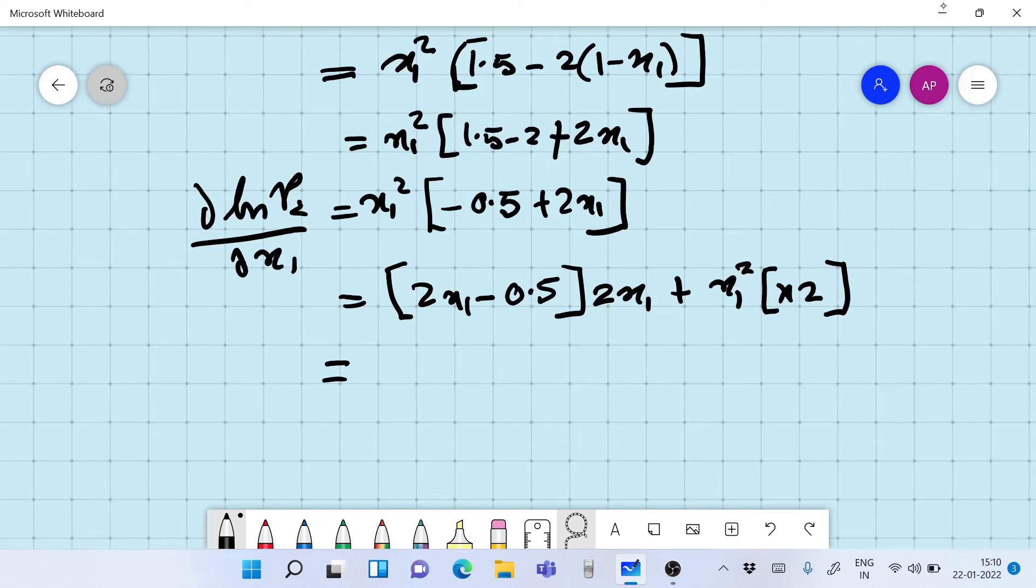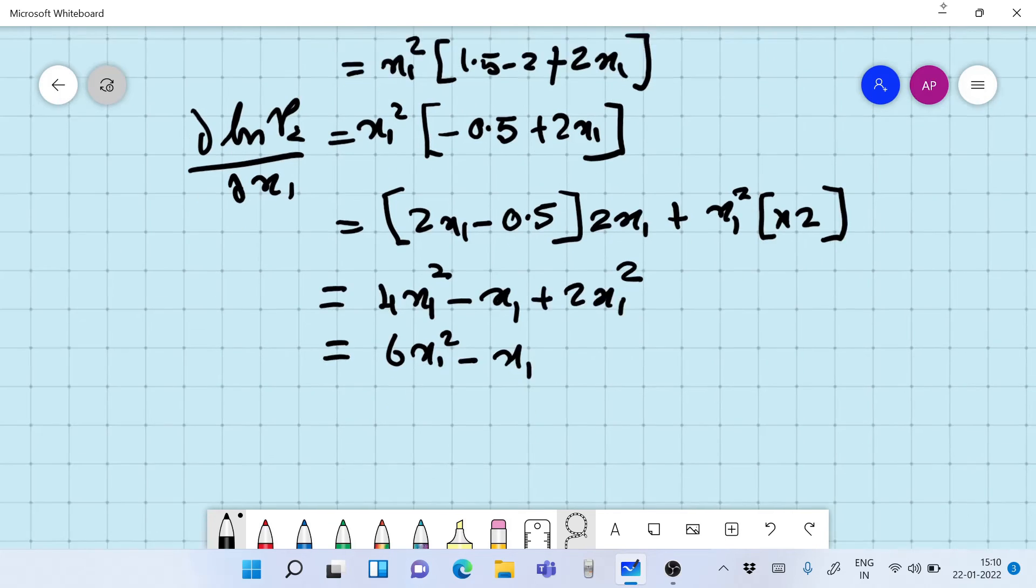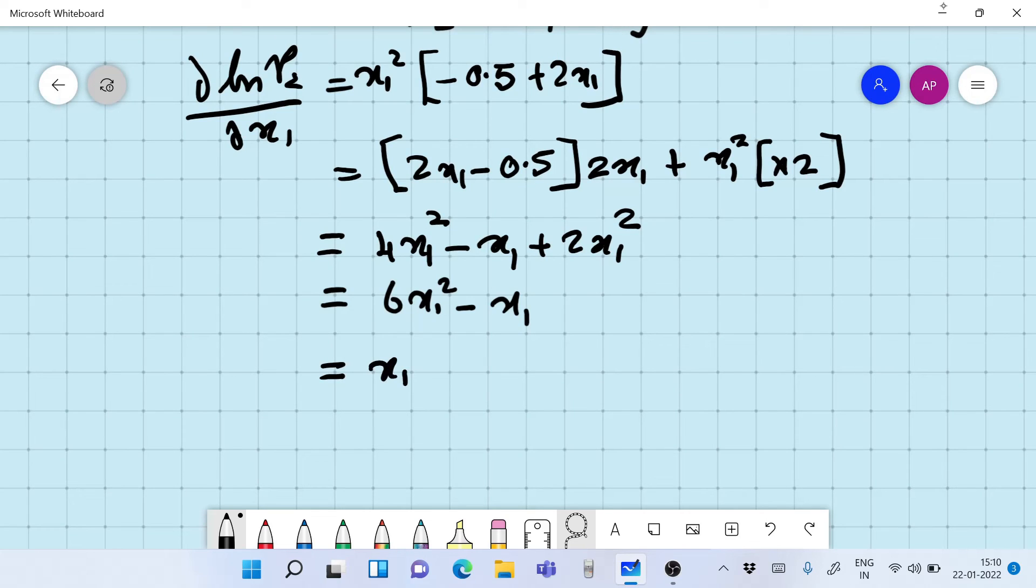Now what we do is we differentiate it. d ln gamma 2 by dx1. Now we have 2x1 times minus 0.5, that's 2x1, plus x1 square into 2. That's into 2. We have now 2x1, 2x1, that makes it 4x1 square minus x1 plus 2x1 square. That's 6x1 square minus x1. That makes it x1 into 6x1 minus 1.